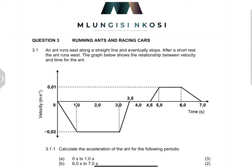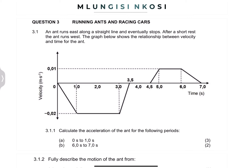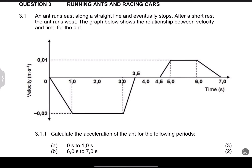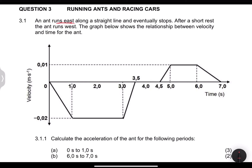So we're given a question on laws of kinematics. They say an ant runs east along a straight line and eventually stops. After a short rest, the ant runs west. The graph below shows the relationship between the velocity and the time for the ant. Now, the graph starts on the negative side, which should already tell you that in this case they must have taken east as negative — meaning they've taken the direction to the west as positive.